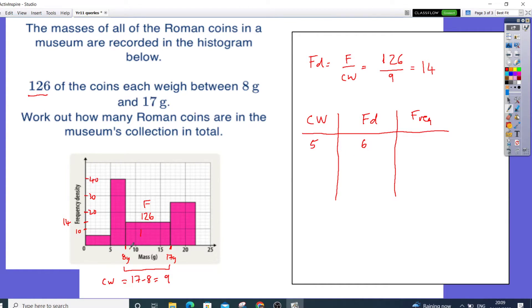This one here goes from 5 to 8. So that's going to be 3, the class width. And that goes up to 40, the frequency density. It's 40, and that's 3.